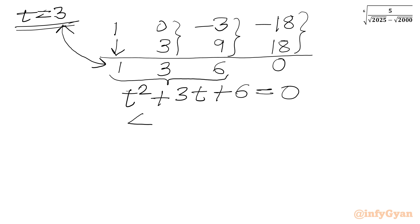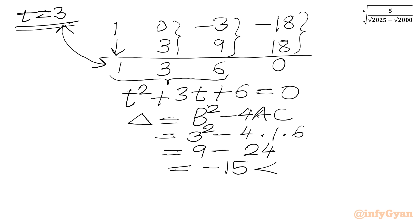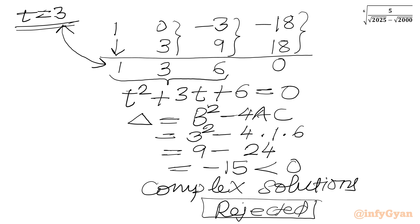We check the discriminant delta equals b squared minus 4ac, where b is the coefficient of t. So delta equals 3 squared minus 4 times 1 times 6, which is 9 minus 24, giving a negative discriminant. The quadratic yields only complex solutions, so we reject those and accept only t equals 3.